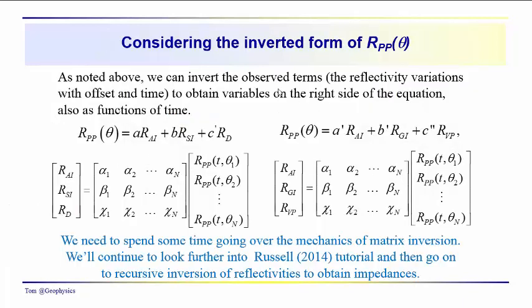As we kind of wrap up on this short video here, we're considering the inverted form of Rp of theta. And we've shown these two expressions here. We've been using the compressional shear and density reflectivities, or over here intercept gradient. And we have these two forms of the inversion to give us the parameters in this equation over here. And this is what we're after.